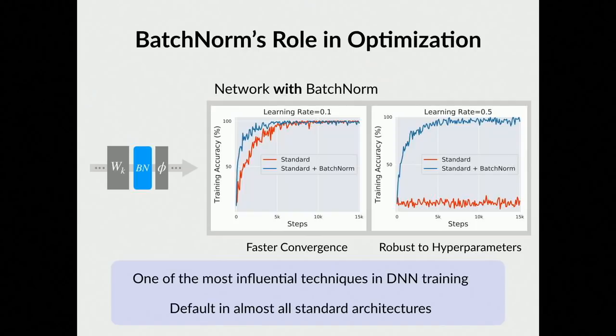As a result, batch norm has become one of the most influential methods in general network training, and it's found by default in almost all deep learning architectures in standard libraries. In this paper, we focused on batch norm specifically, but many of the techniques can also be applied to other normalization techniques. We also don't have a very good grasp on the differences between them, and that's another future direction I'll address at the end.